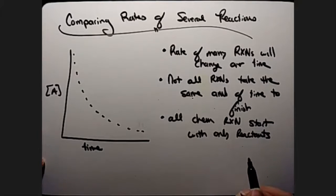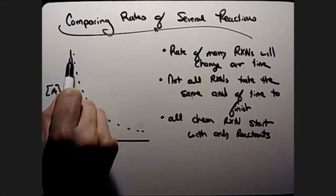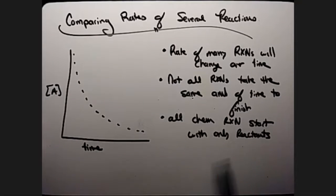You know, some may take a thousand years to develop their first even speck of product, but all chemical reactions will have the reactants present at the beginning. And the other thing, too, is all chemical reactions tend to be their fastest rate at the beginning of that chemical reaction.